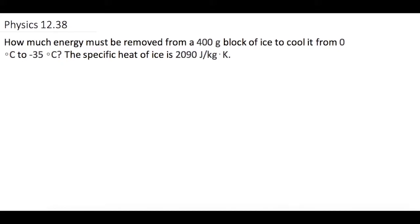How much energy must be removed from a 400 gram block of ice to cool it from 0 degrees Celsius to negative 35 degrees Celsius? The specific heat of ice is 2,090 joules per kilogram Kelvin.